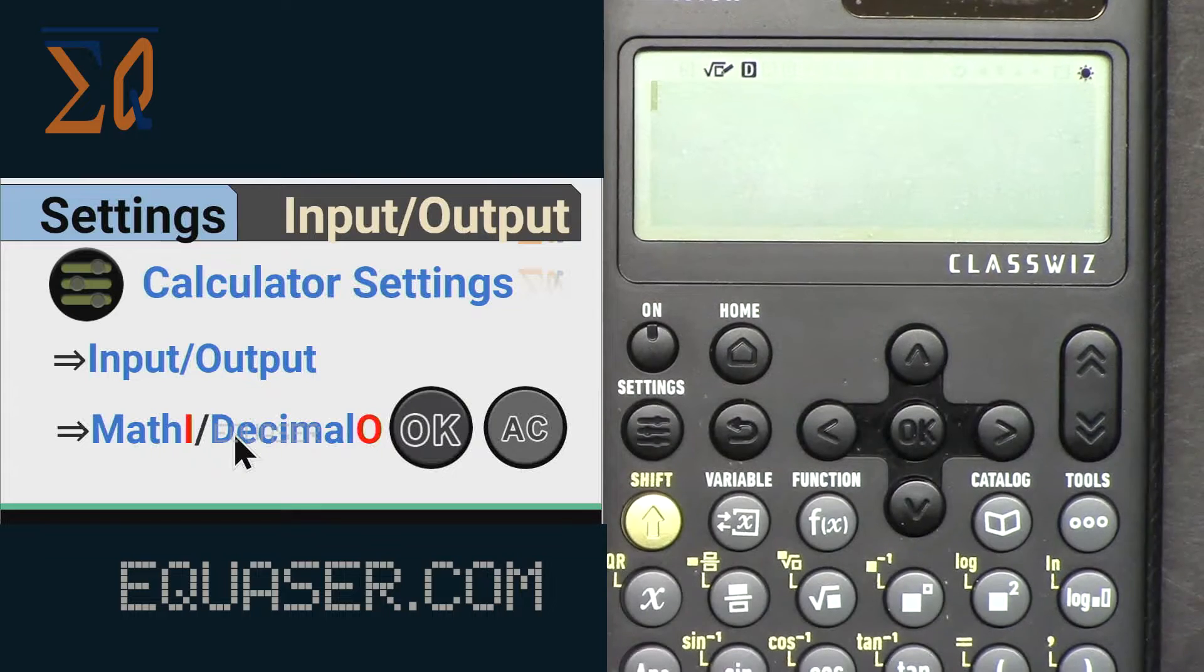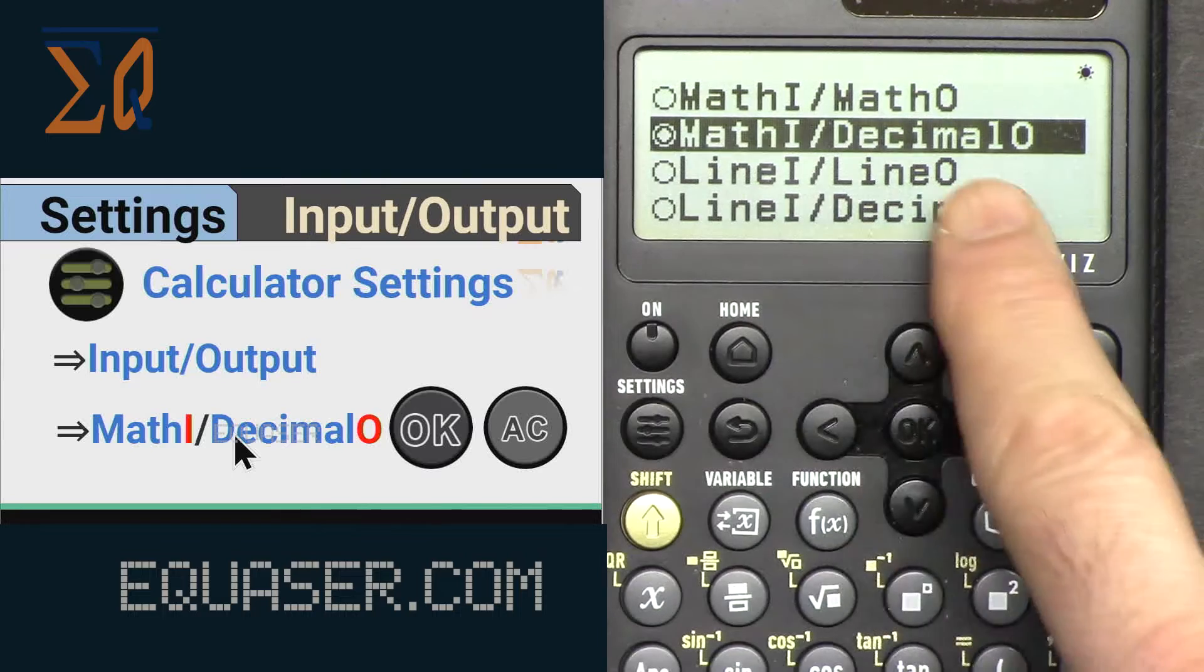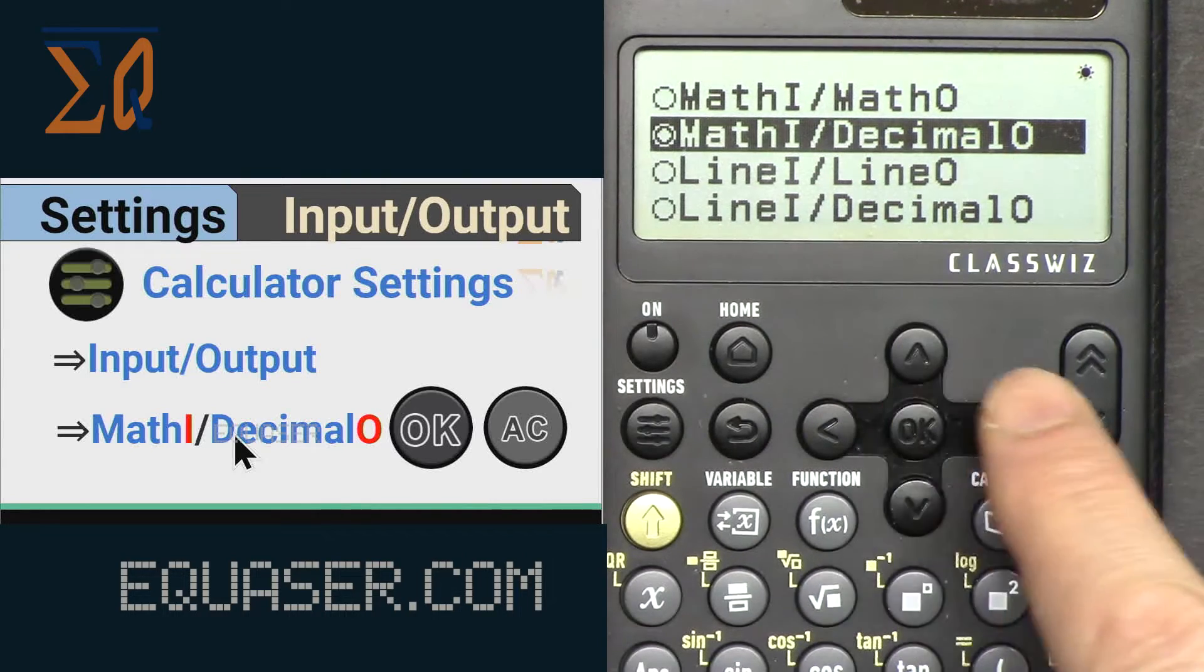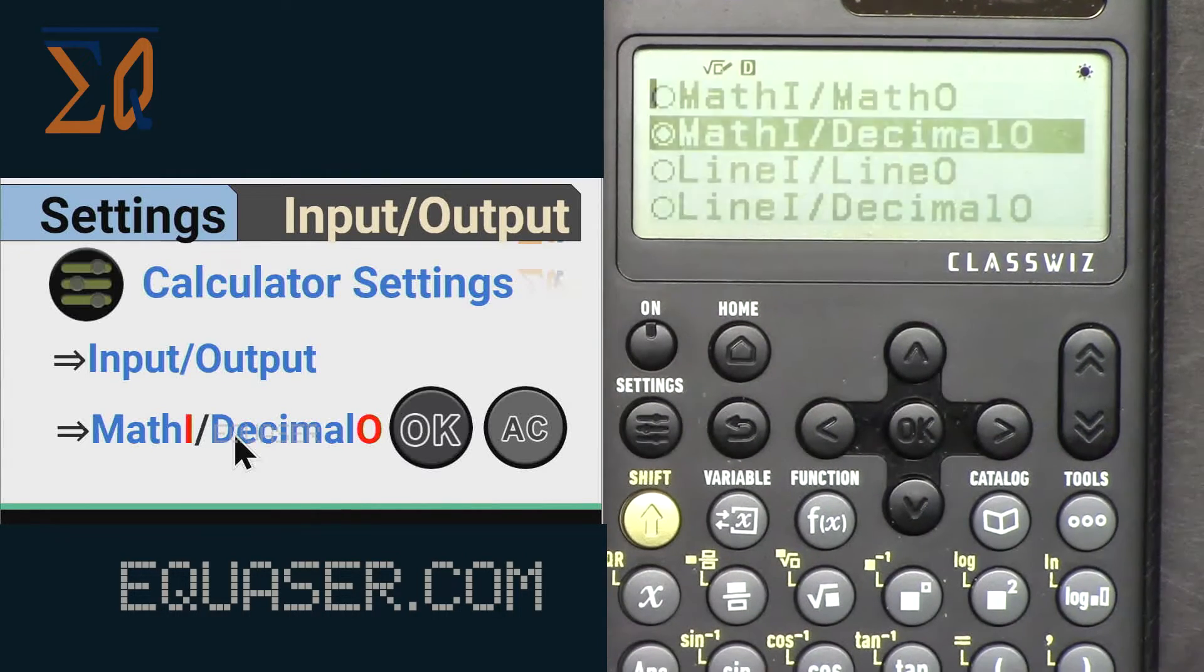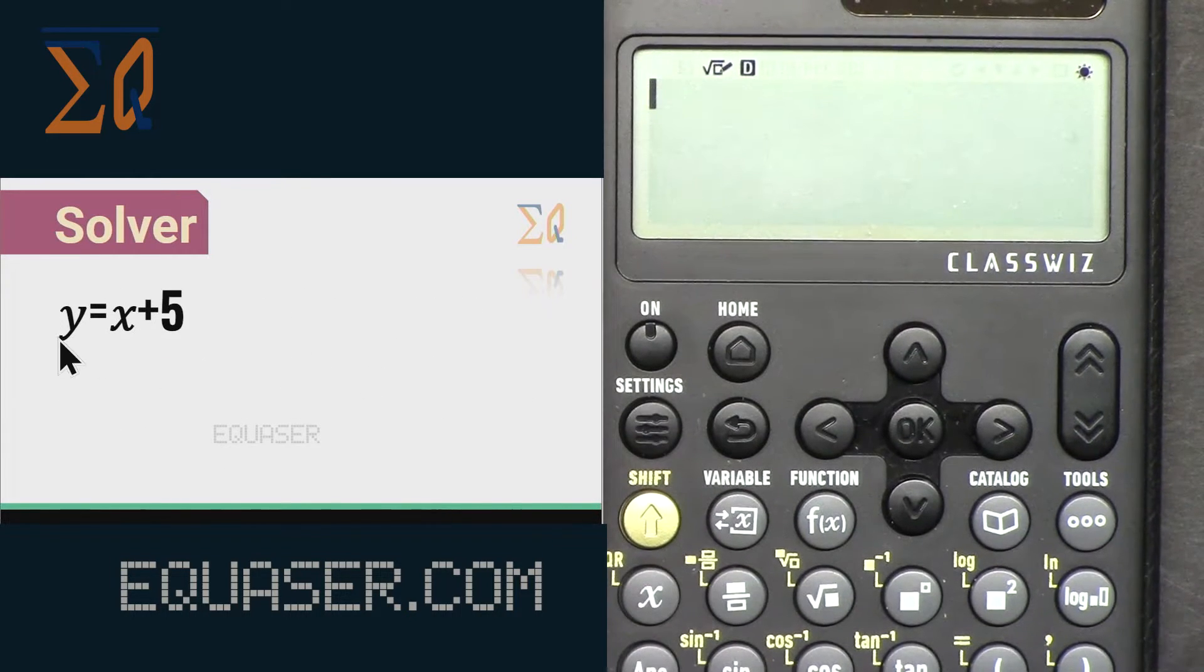In our calculation we must set it in decimal mode. Go to settings and input output and let's set it to Math In and Decimal Out. And then all clear. The solver is using Newton's method to approximate the solution.